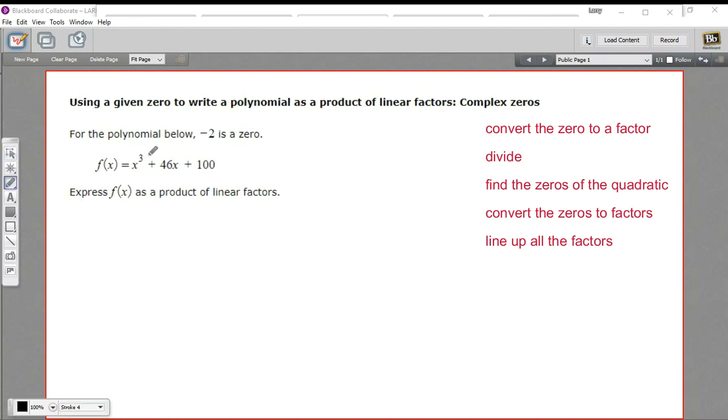In this problem, we have a polynomial function here, a third degree function, and we're being told that negative two is one of the zeros. So we're given that little hint.